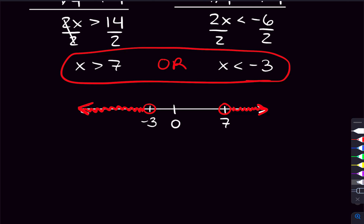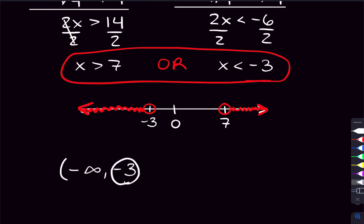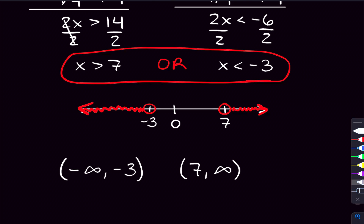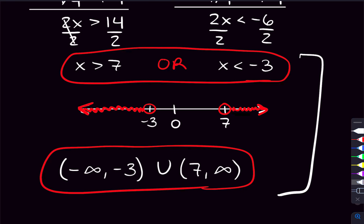There's one other way your teacher could ask for your answer: written in interval notation. Looking at our number line, the shading goes from negative infinity to negative 3, so we write negative infinity to negative 3. With interval notation, we use either parentheses or brackets. With infinities, we always use parentheses. We also use a parenthesis at negative 3 because x can't equal negative 3 — it's less than, not less than or equal to. If it were less than or equal to, we'd use a bracket. We also have 7 to infinity, using parentheses for both. To say it's this range and this range, we use a union symbol — a little u — between them. That's our answer in interval notation.